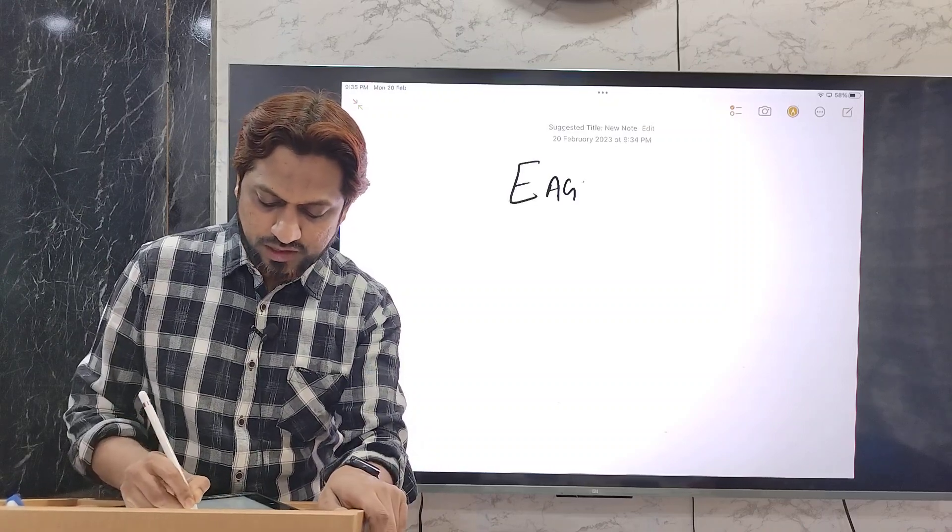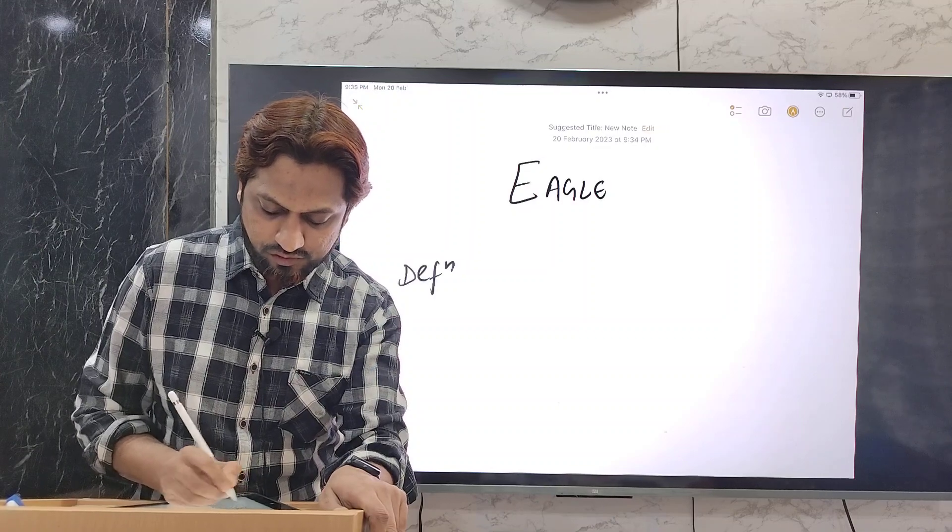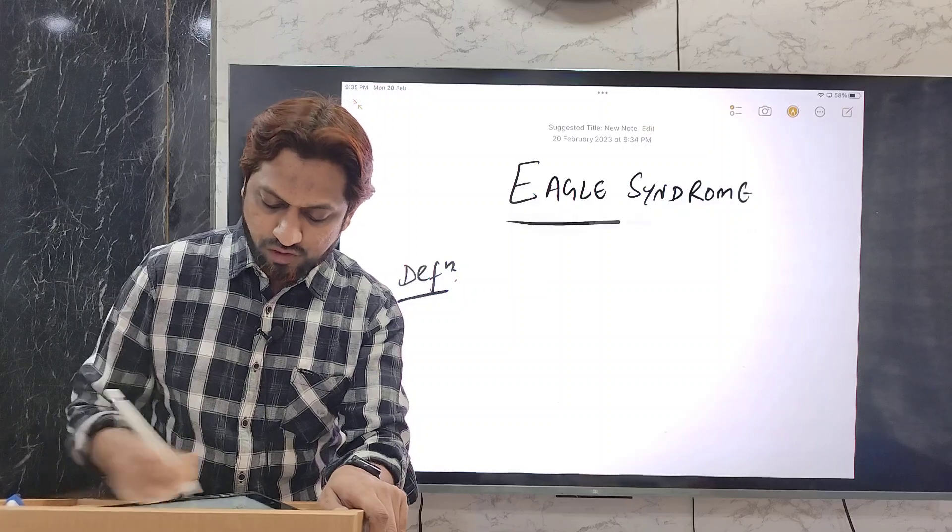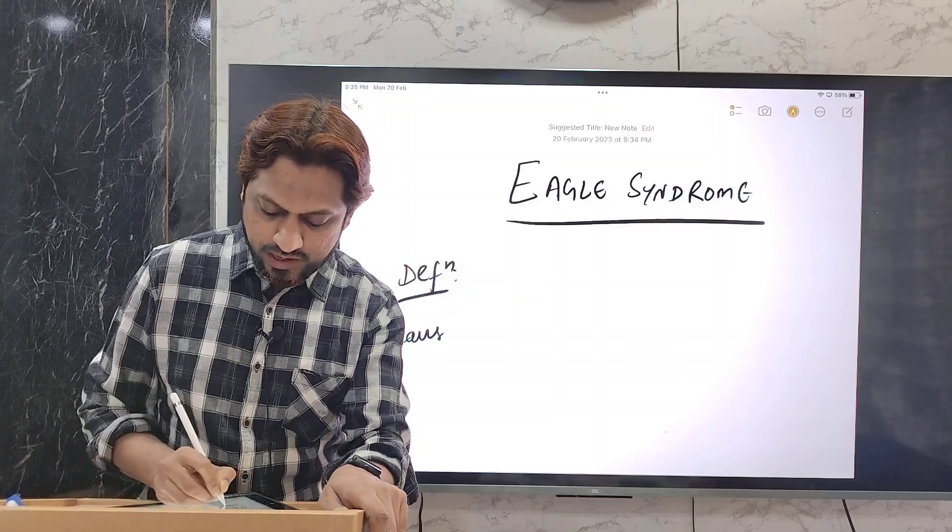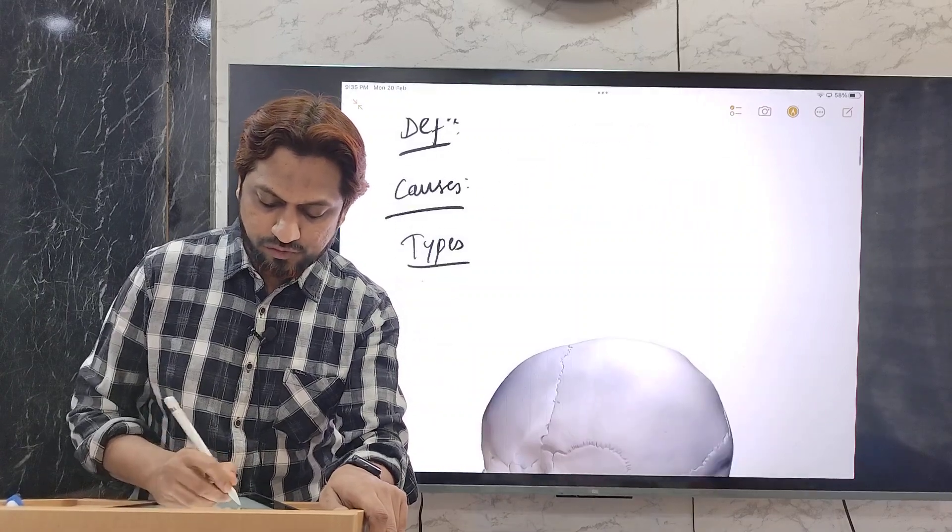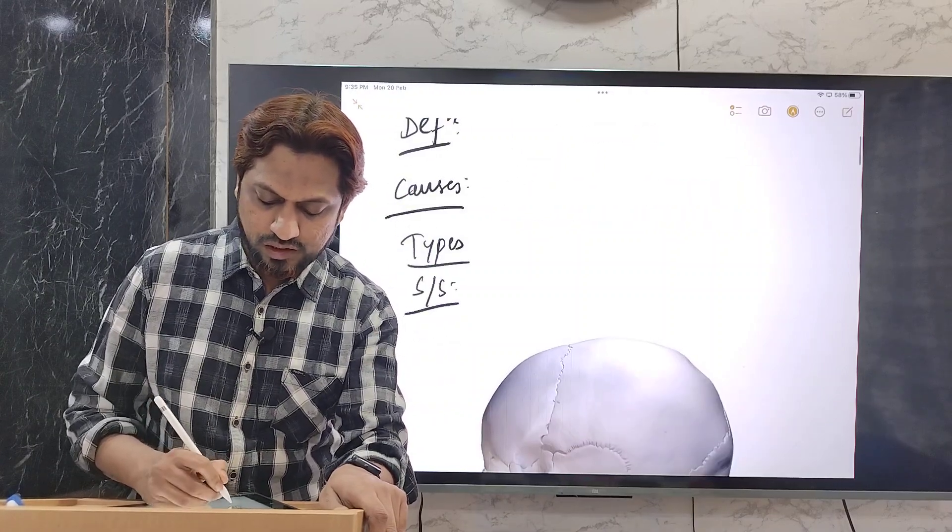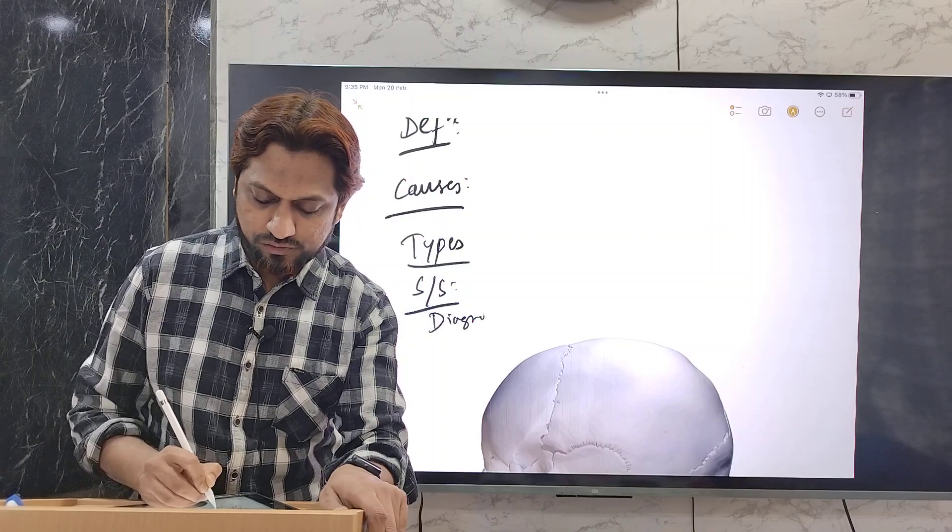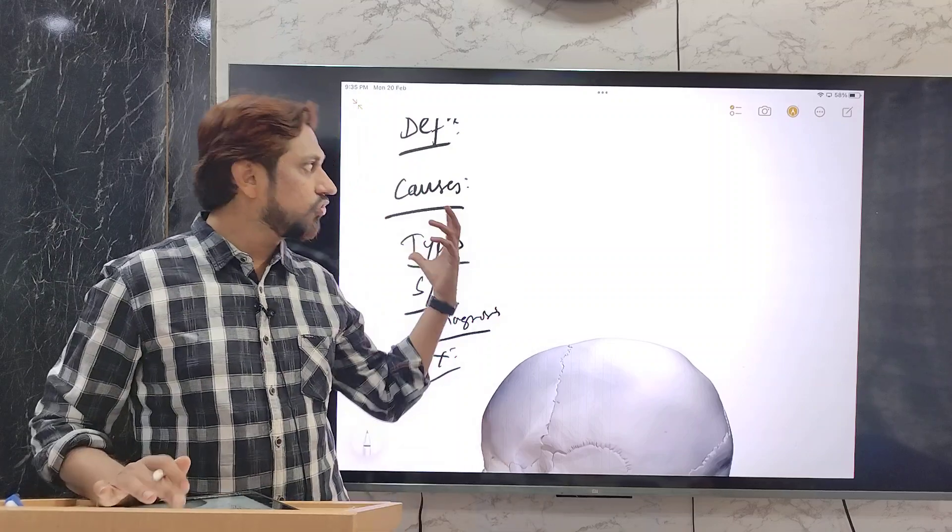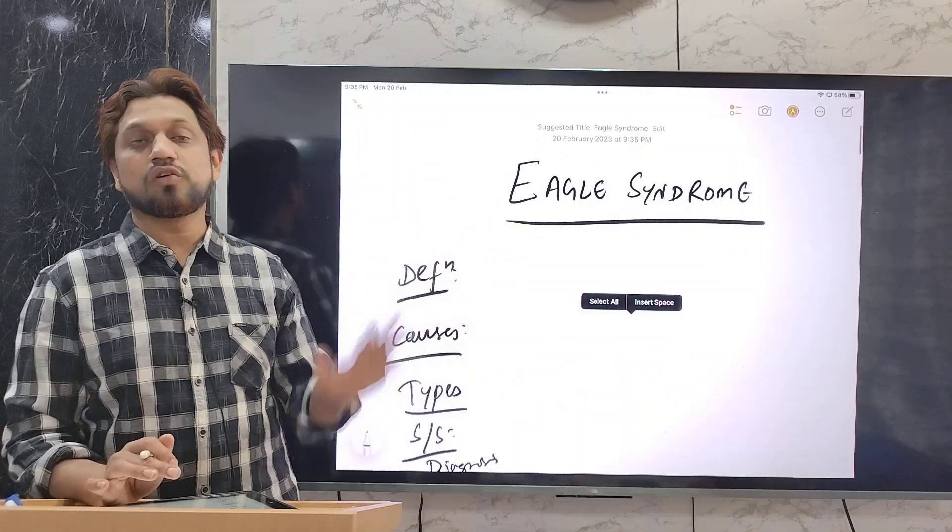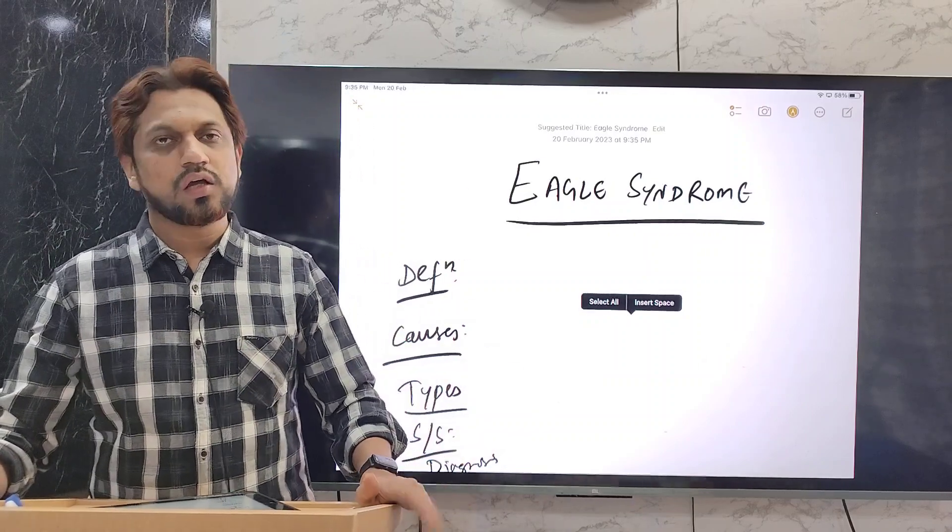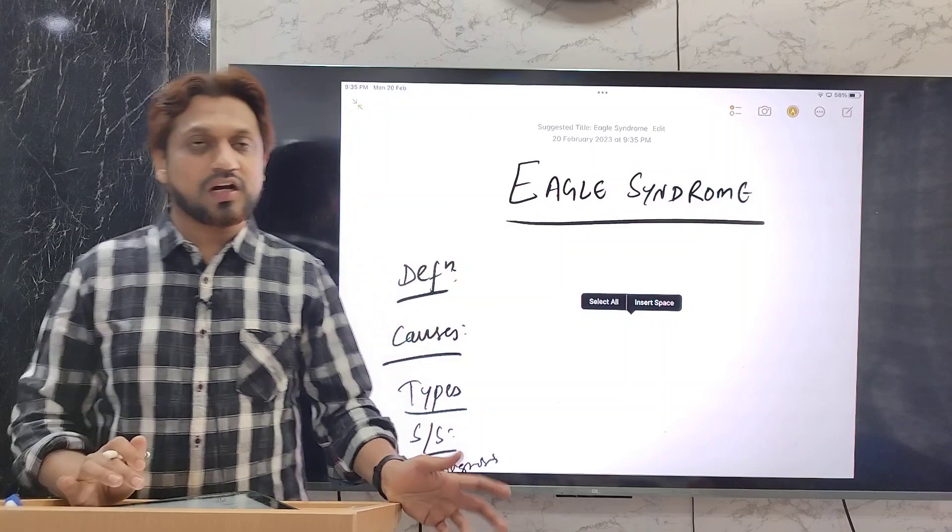What exactly is this Eagle Syndrome? What is the definition of Eagle Syndrome? We are going to discuss today, plus what are the causes of Eagle Syndrome and what are the types of Eagle Syndrome and signs and symptoms of Eagle Syndrome and diagnosis and finally the treatment of Eagle Syndrome. Under these side headings, we are going to discuss this particular topic Eagle Syndrome. This topic comes under ENT, that is otorhinolaryngology. This is a surgical condition mainly.